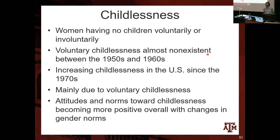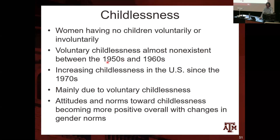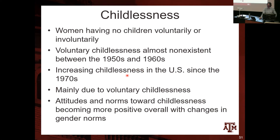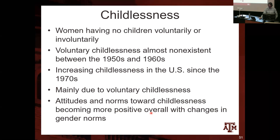Something we've been experiencing a lot in recent decades is women deciding not to have children at all — voluntary childlessness, but also involuntary childlessness. Voluntary childlessness almost did not exist between the 1950s and 1960s, but there was an increase since the 1970s. It's exactly because women now decide to invest in their education and career, or simply don't desire to have children anymore. Overall, the culture has changed — attitudes and norms towards childlessness are becoming more positive with changes in gender norms.